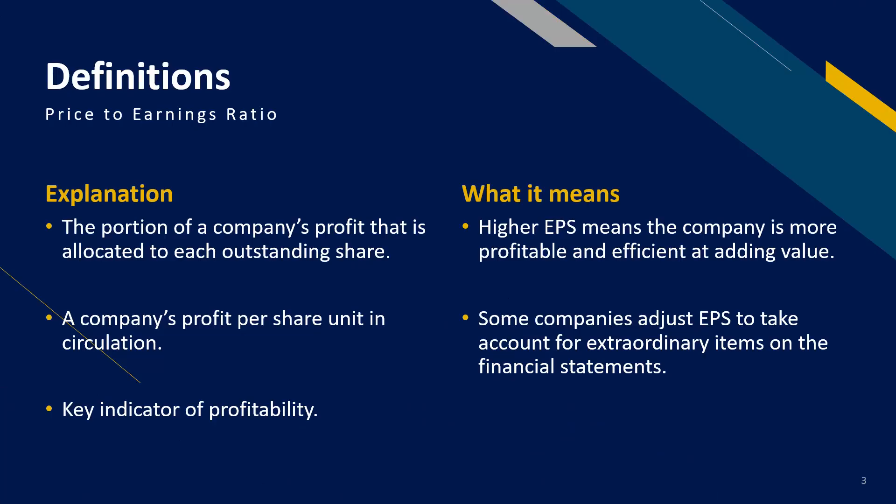Earnings Per Share is calculated as a company's profit divided by the outstanding shares of the common stock in circulation. This basically means what the company makes in profit divided by the number of shares it has. This is a key indicator of profitability. Sometimes it is common for a company to report EPS which is adjusted for extraordinary items and potential share dilution. We'll explain this more later.